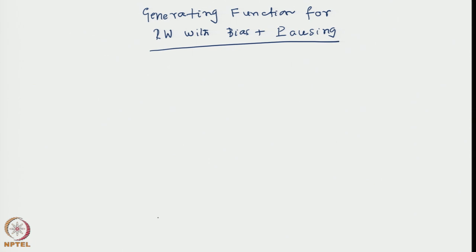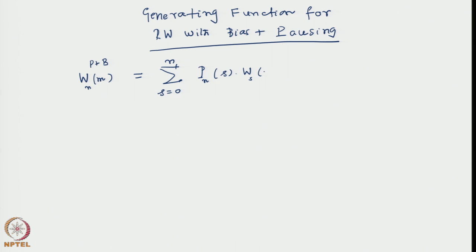When we set out to derive the generating function, we started with the formula: the probability of occupancy at the nth step at site m in the general case of pause and bias together is equal to the sum of the binomial probability of s successful steps out of a total of n steps, multiplied by the occupancy probability for those s successful steps being at site m considering bias.